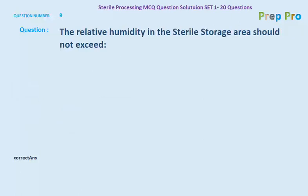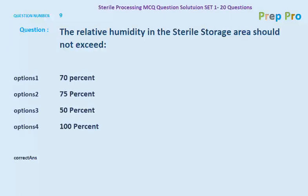Question number nine: the relative humidity in the sterile storage area should not exceed what? The options are 70%, 75%, 50%, and 100%. The correct answer is 70% — that is the maximum relative humidity; it cannot exceed 70%.